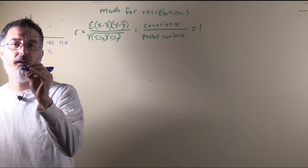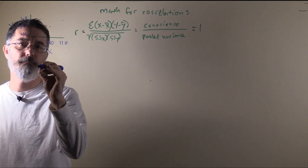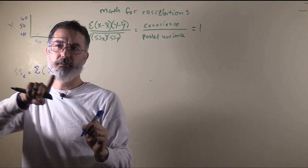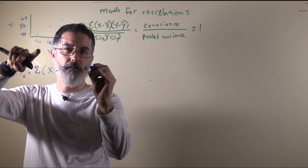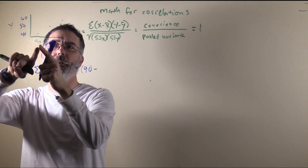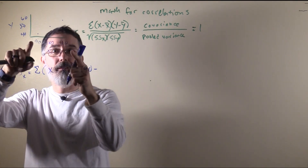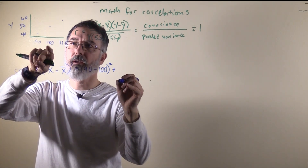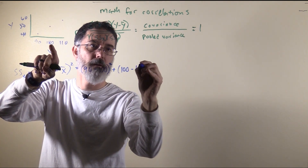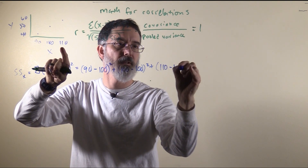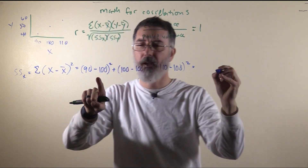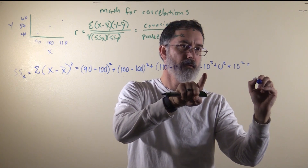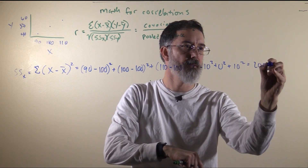First, we will calculate the sum of squares for x. We have been calculating sums of squares all semester. For each x-score, you subtract the mean, square it, and add that to the rest. The x-scores are 90, 100, and 110, so the mean is 100. That gives us (90−100)² + (100−100)² + (110−100)² = (−10)² + 0² + 10² = 100 + 0 + 100 = 200. That is our sum of squares x.